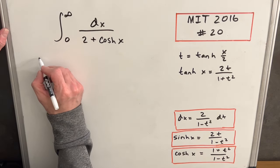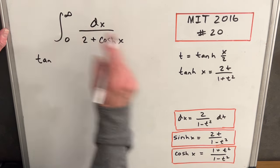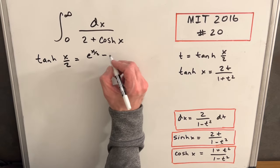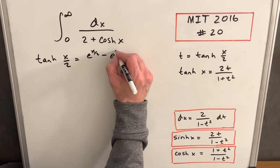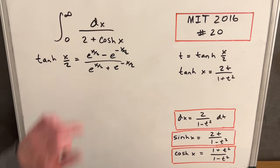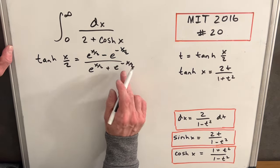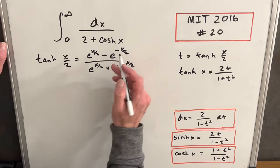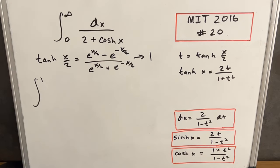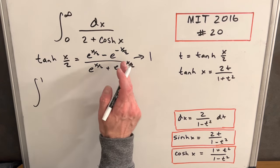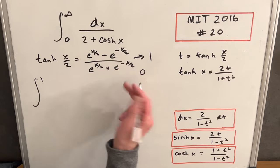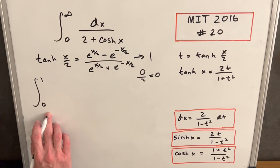I just need to update the bounds, so be a little careful. We're going to be plugging infinity into tanh(x/2). I can write it in terms of the definition: tanh is (e^(x/2) − e^(−x/2)) over (e^(x/2) + e^(−x/2)). Plugging in infinity, the negative exponential terms go to 0, so the expression goes to 1. For the lower bound, plugging in 0 gives (1−1)/(1+1) = 0. So we're evaluating from 0 to 1.